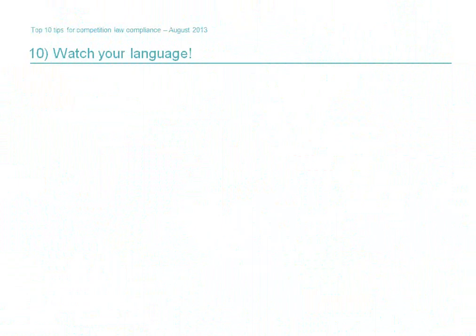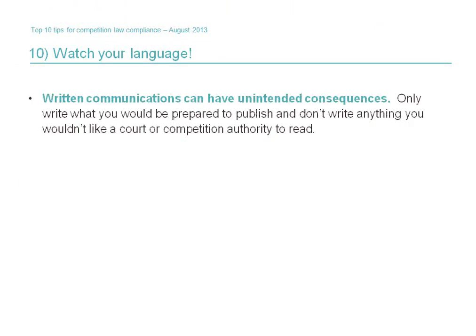Tip number ten: watch your language. Remember to be careful about your language — both what you do put in writing and what you don't. Only write down text that you would be happy for a competition authority or a court to read. Remember that it's often difficult to work out the intention behind emails and if competition issues later arise, the worst will almost always be assumed. For example, even the most harmless communication with a competitor mentioning pricing risks being interpreted as evidence of a serious competition infringement.